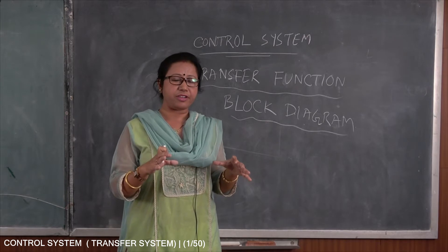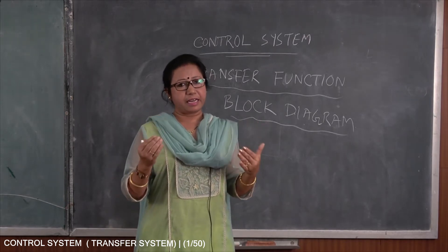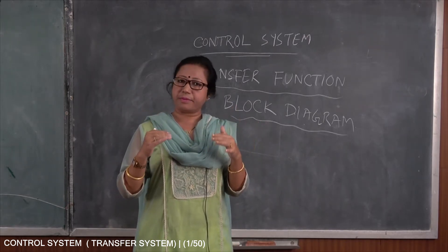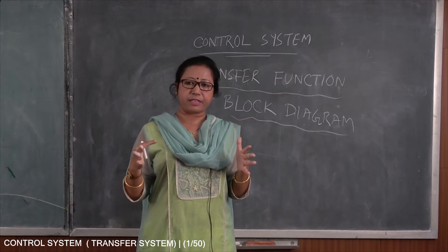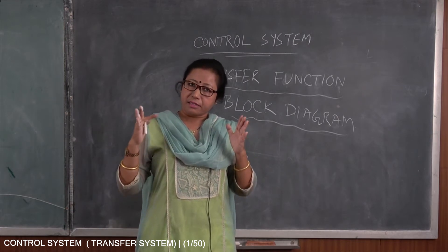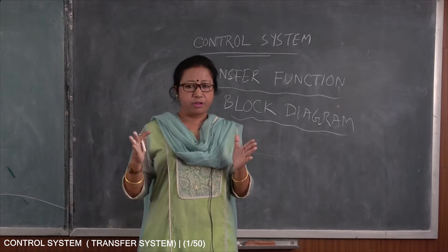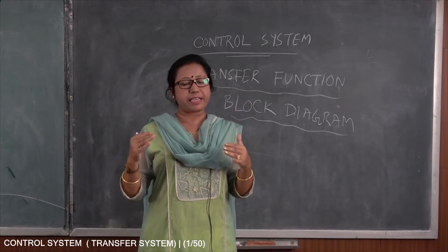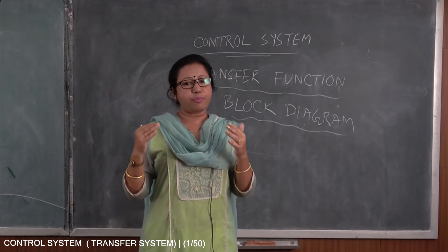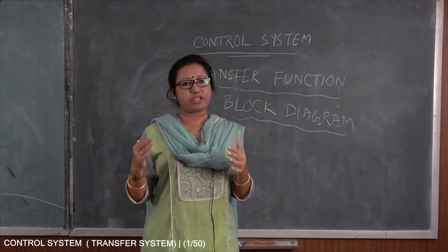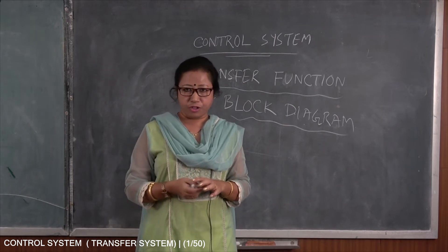If I can generate transfer function, from there I can understand the closed loop system characteristics equation, and from that characteristics equation I can calculate the poles. From the transfer function I can calculate poles and zeros. So poles and zeros are very important to check the stability of the control system.